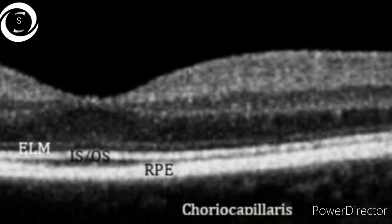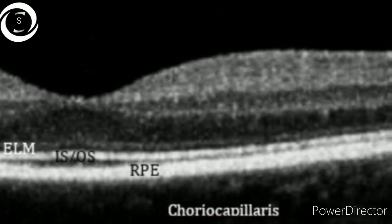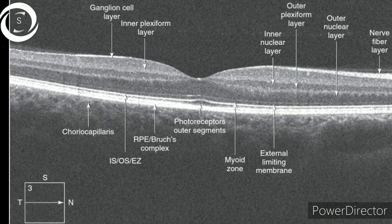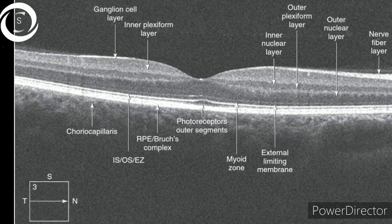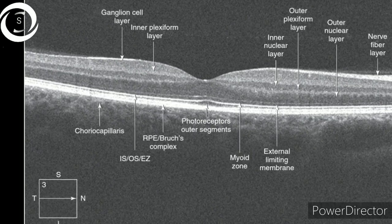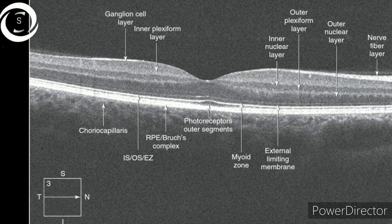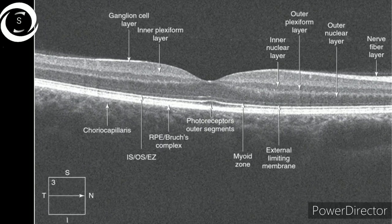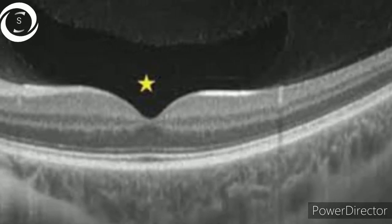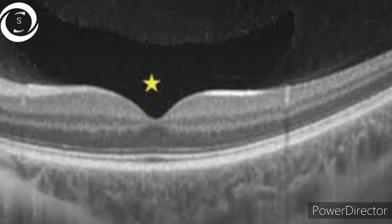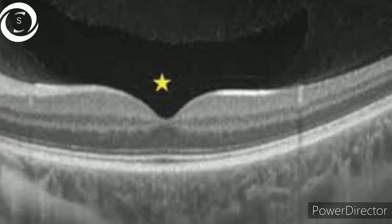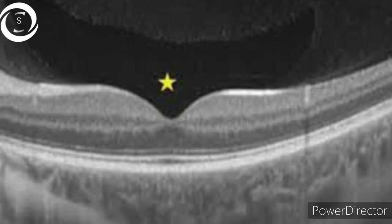You can see here in grayscale the spectral domain OCT — another spectral domain but with an advanced version and high resolution. After spectral domain, the latest is swept source OCT. It uses a longer wavelength of 1050 nanometers, whereas the others use the near-infrared range of around 800 nanometers.